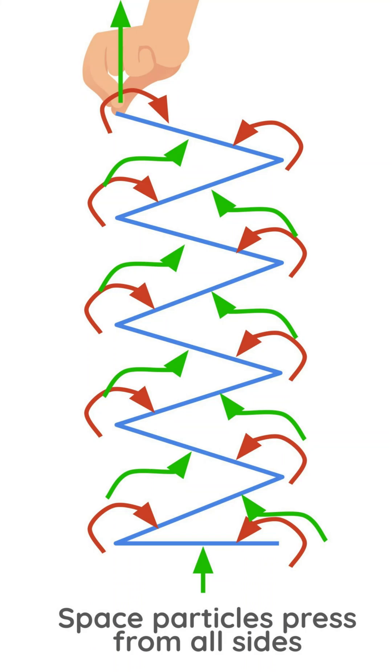Cartesian Physics explains that space particles are pressing on all parts of the slinky, with more pressing from the top. The tension fights the downward space particles, causing a balance.